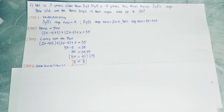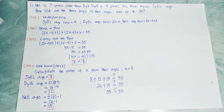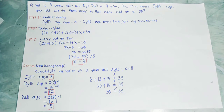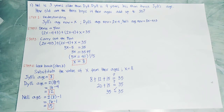Step 4, the last step, is look back or check. Substitute the value of x from their ages. We are going to substitute the value of x which is 8. Jill's age is 8. Anil's age equals 2x minus 4, so 2 times 8 equals 16, minus 4 equals 12. Anil's age equals 2x minus 4 plus 3.